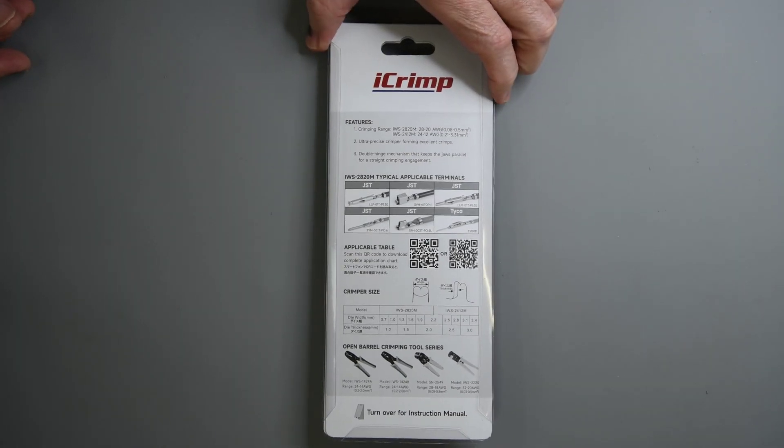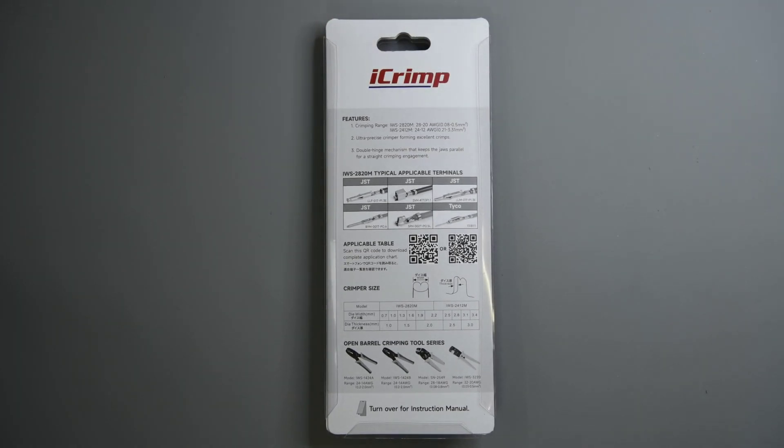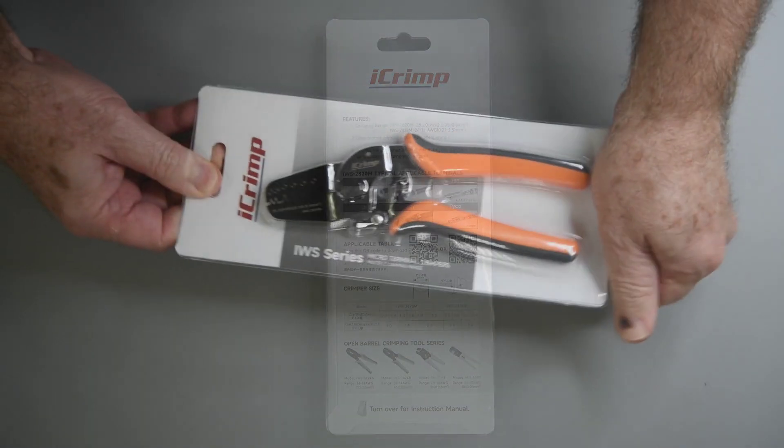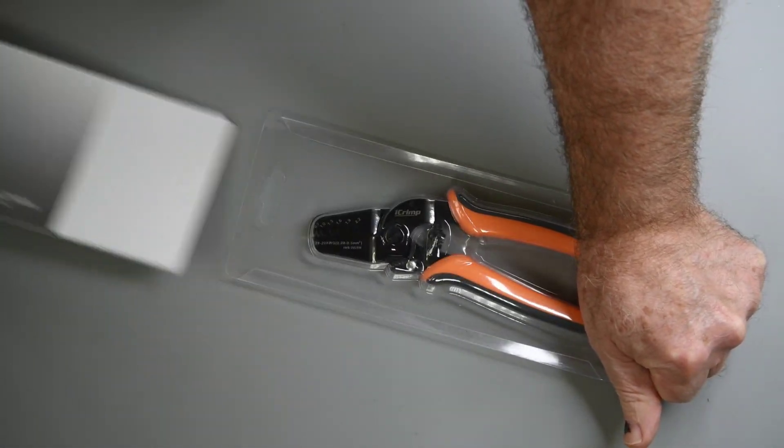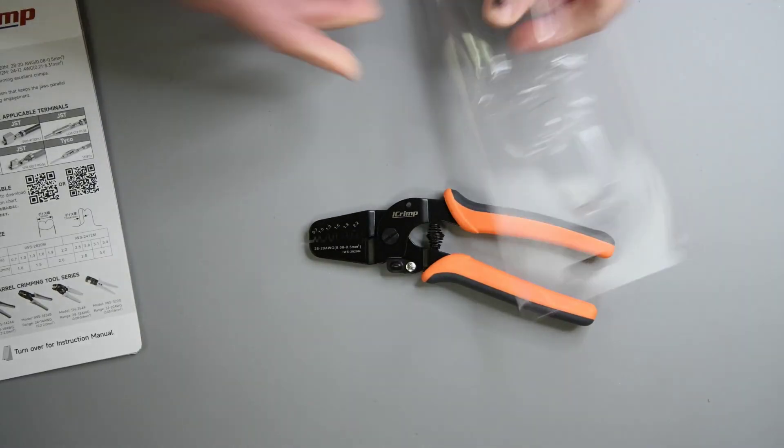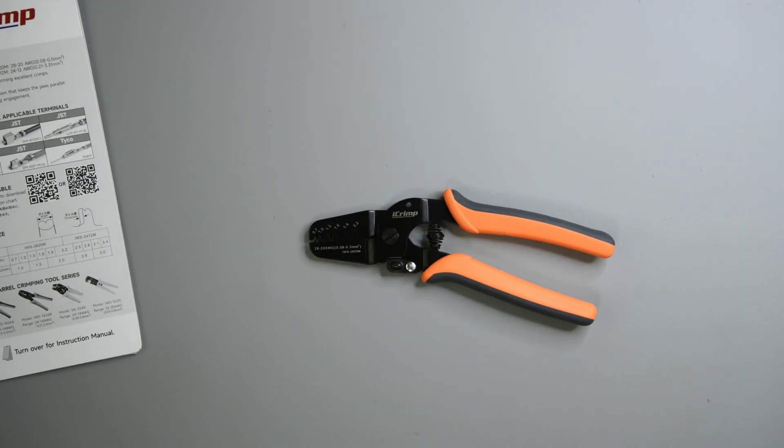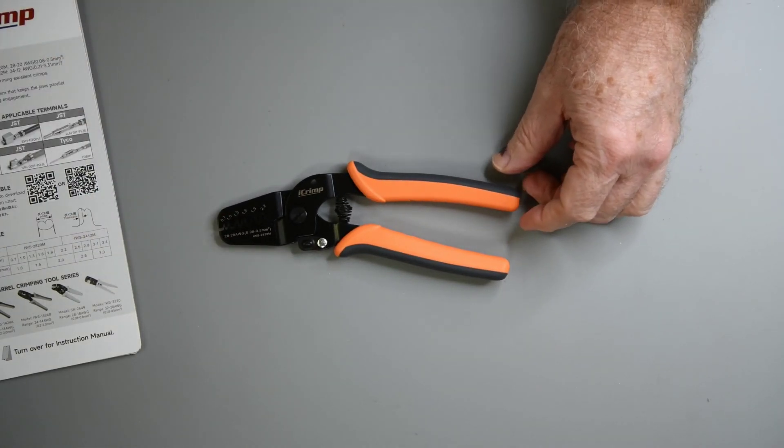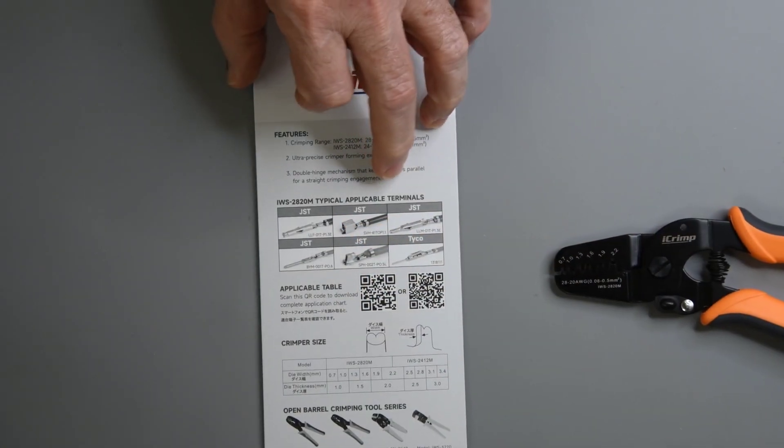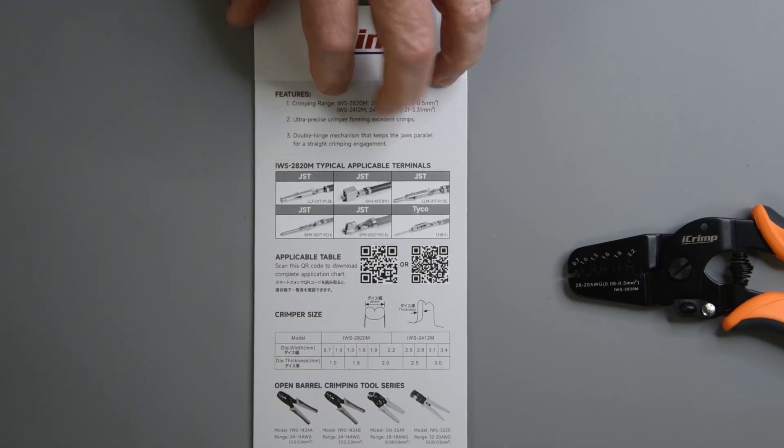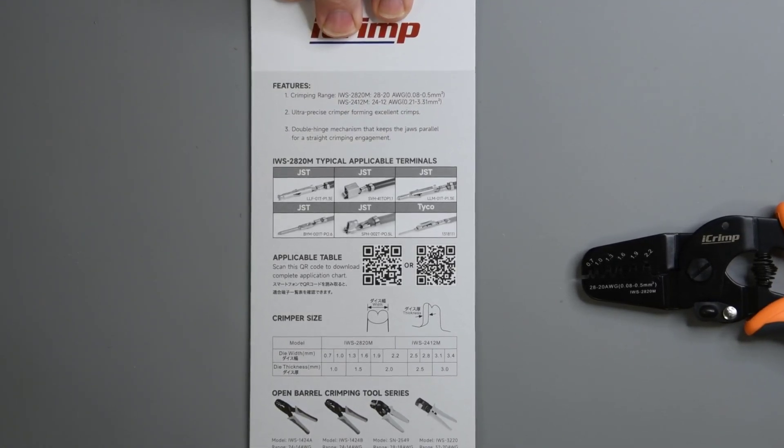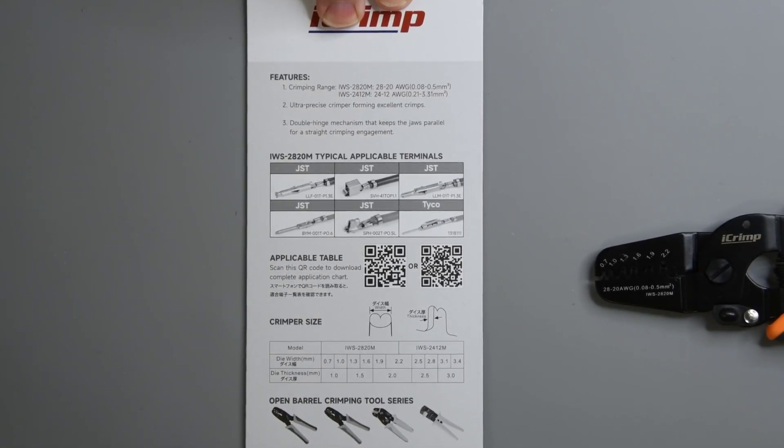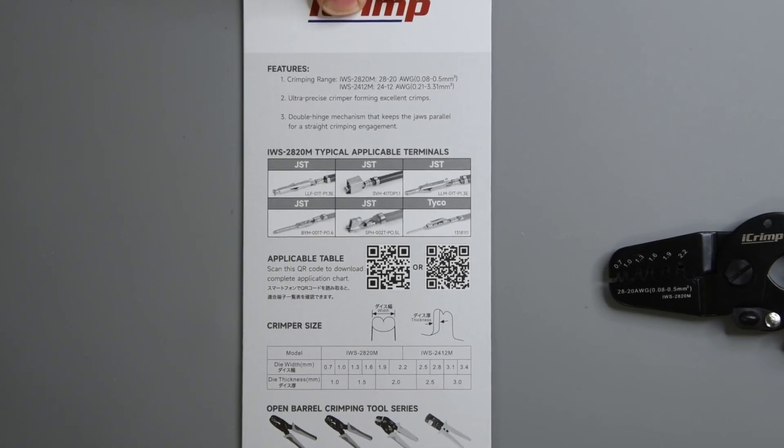The most difficult crimp terminals I use are the Molex Clickmate. I've had good success with the Engineer PA09 crimp tool. The depth of the 1mm crimp die is about 1.7mm on the PA09 and that is just a tiny bit too deep. The depth of the 1mm die on this tool is only 1mm. Both the 0.7mm and the 1mm die slots have a depth of 1mm.